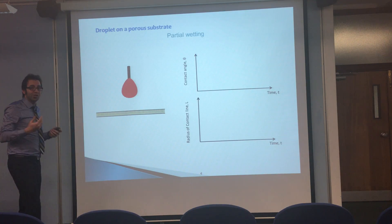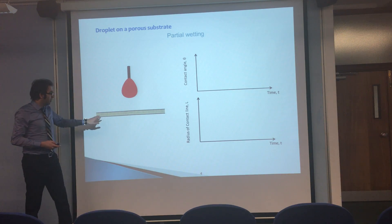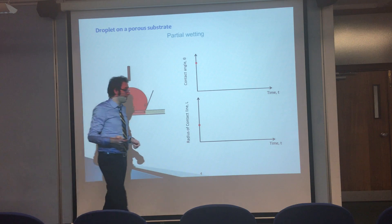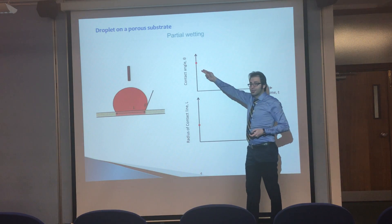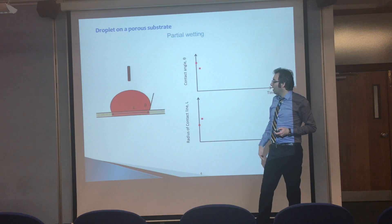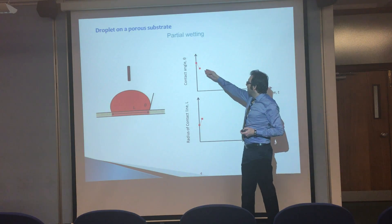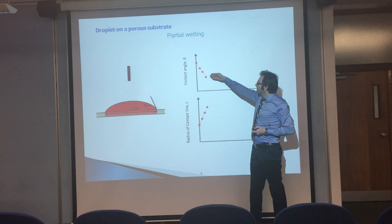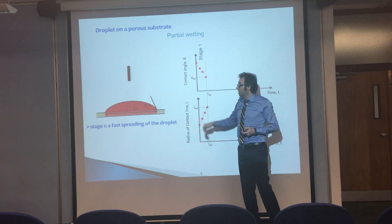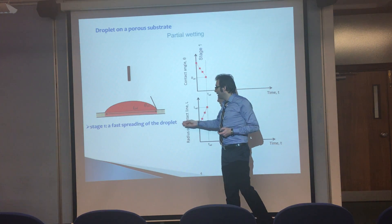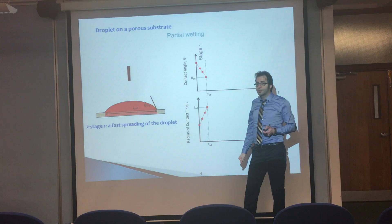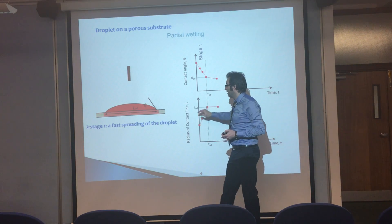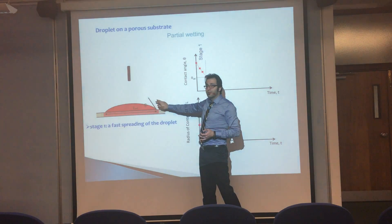The second behavior is the partial wetting case. If we deposit a droplet over the porous layer and monitor the contact angle and the droplet base radius, we observe the following. Initially the contact angle is at its starting value and the droplet base radius begins small. Over time the drop spreads over the porous substrate: the contact angle decreases and the droplet base radius increases, until the contact angle reaches the advancing contact angle. So the first stage is the fast spreading of the droplet over the porous substrate.